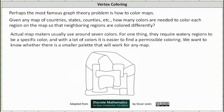Actual map makers usually use around seven colors. For one thing, they require watery regions to be a specific color, and with a lot of colors it is easier to find a permissible coloring. We want to know whether there is a smaller palette of colors that will work for any map.